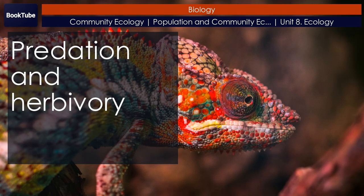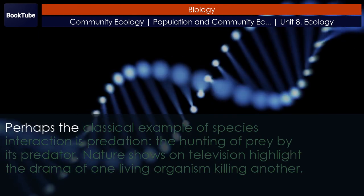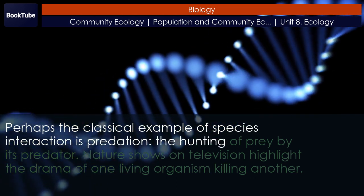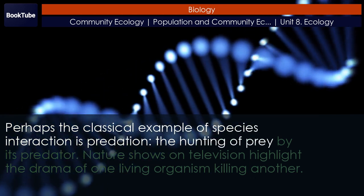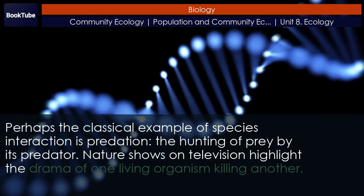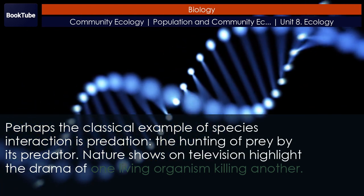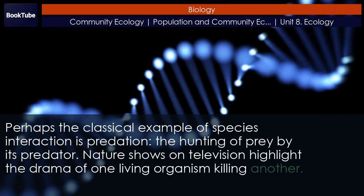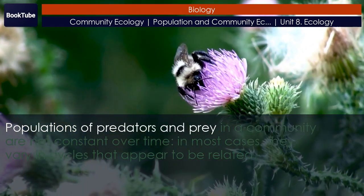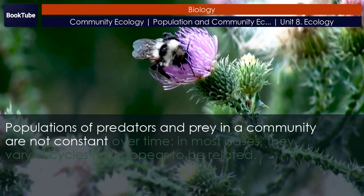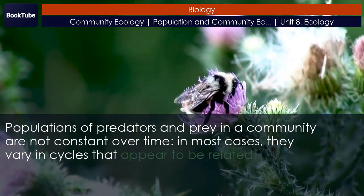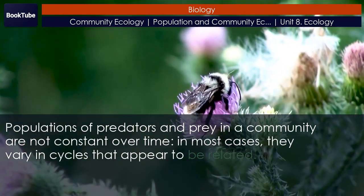Predation and herbivory. Perhaps the classical example of species interaction is predation — the hunting of prey by its predator. Nature shows on television highlight the drama of one living organism killing another. Populations of predators and prey in a community are not constant over time. In most cases, they vary in cycles that appear to be related.